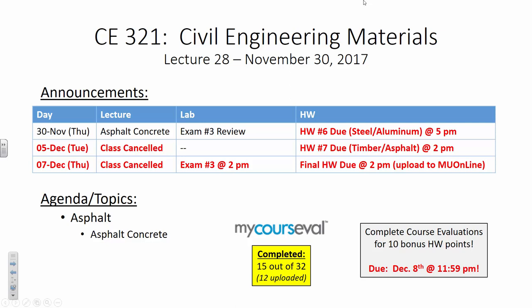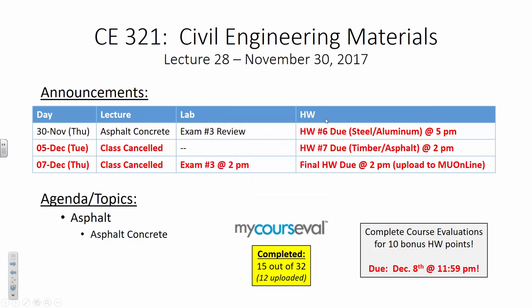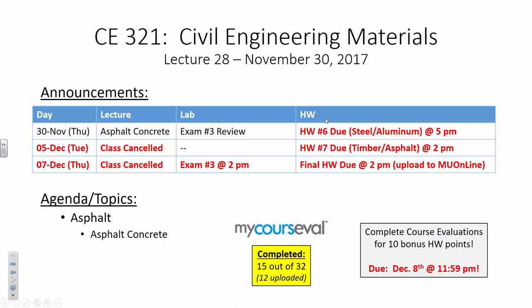Let's talk about next week. Class is canceled for both Tuesday and Thursday because we're pretty much done. There's one topic that we really didn't talk about and that's composite materials, but even if we were to talk about composite materials, we'd only be giving it a 30,000 foot overview. I've just decided to go ahead and skip that. Plus there's plenty of material on the exam with steel, aluminum, wood, and asphalt.